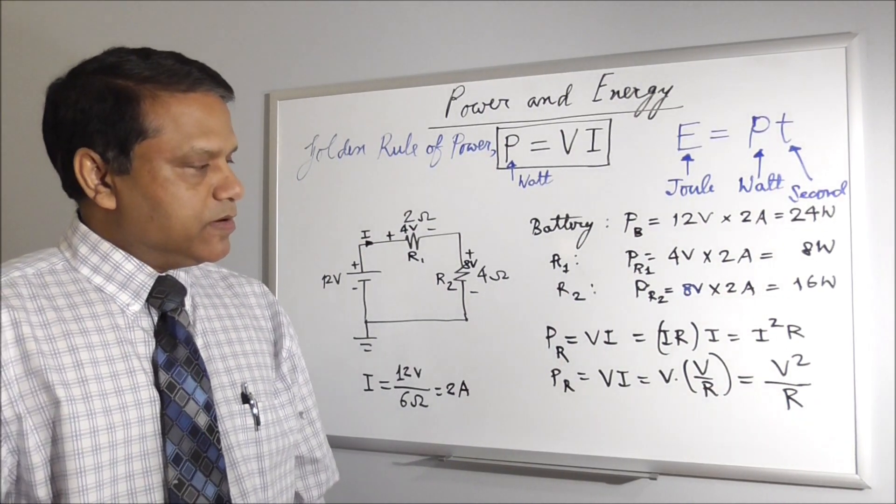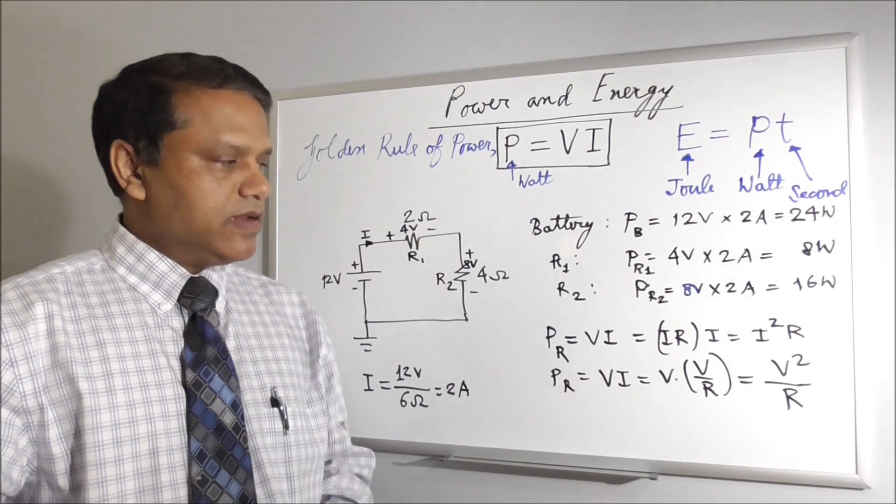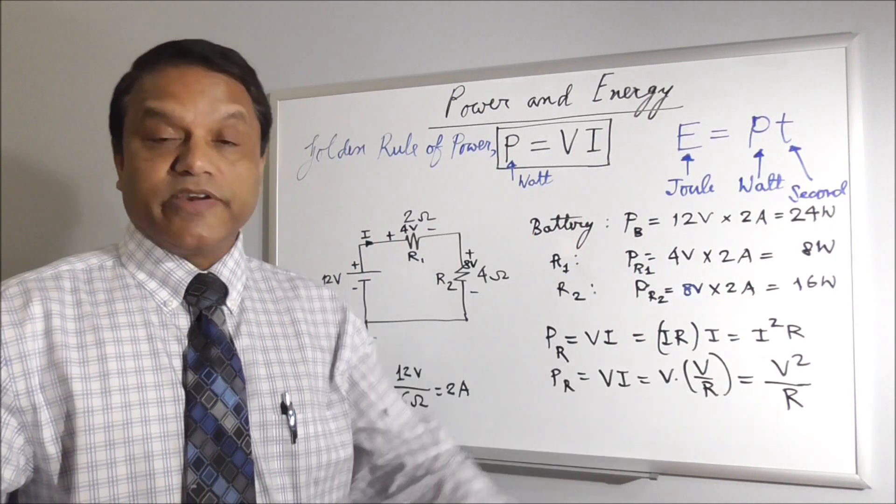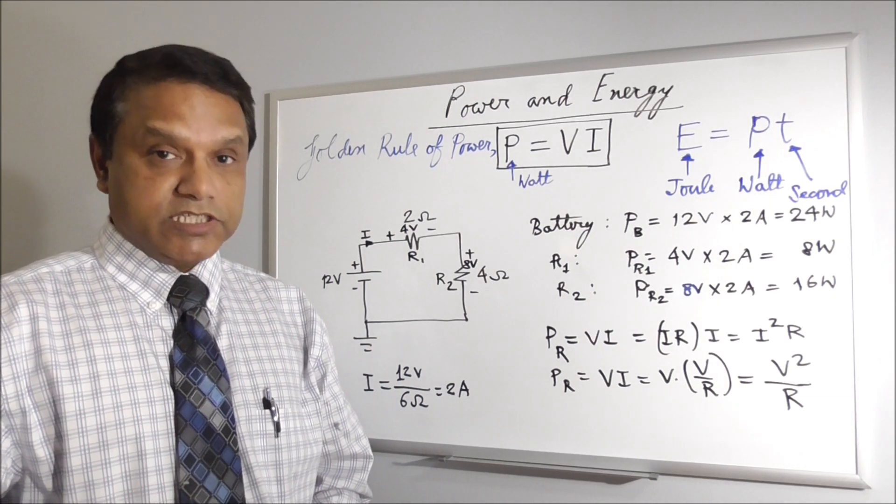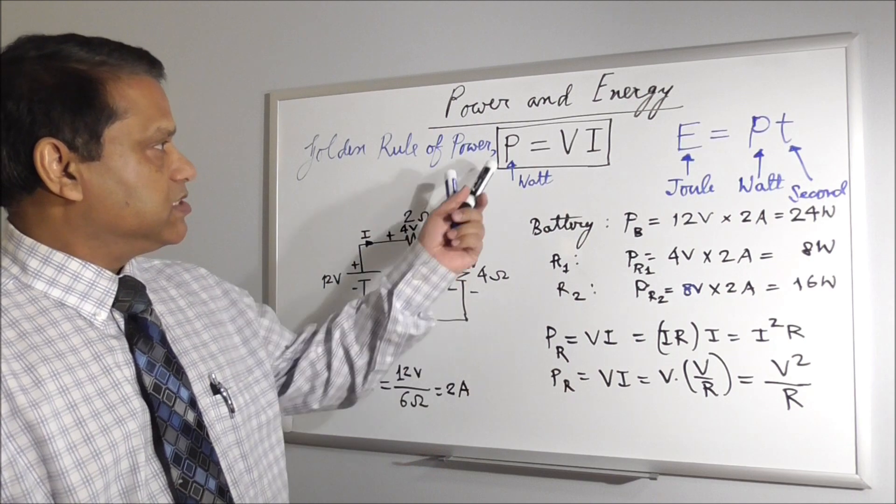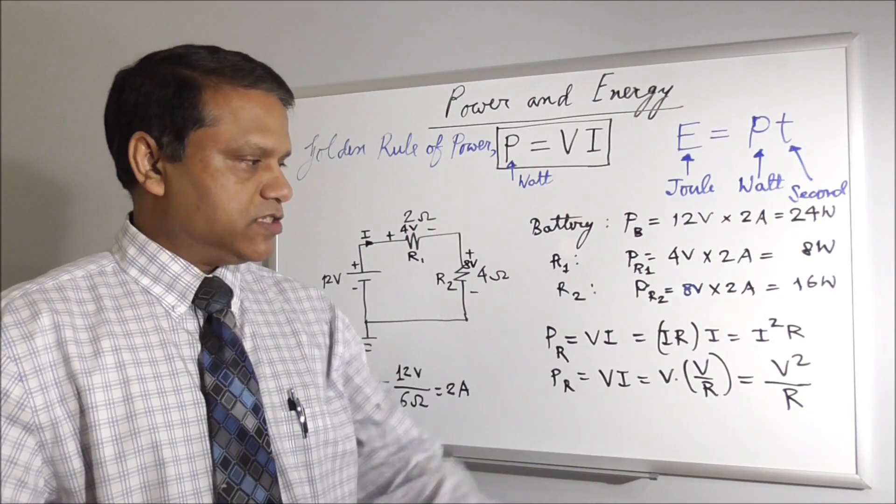But if you have used just V times I, you would get the same answer. But probably with these two, you cannot use them for anything else. You can only use them for resistors. What I have learned, the golden rule of power is P equals VI, but there are two variations for resistors.